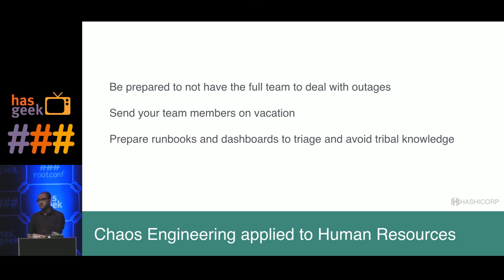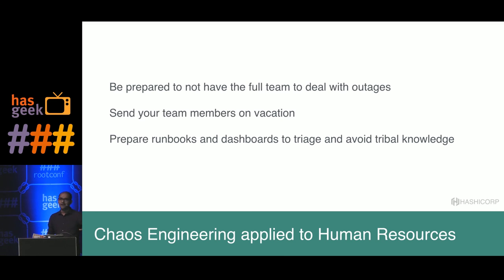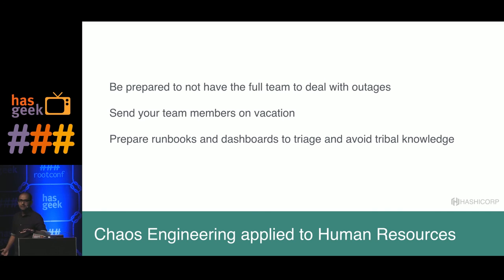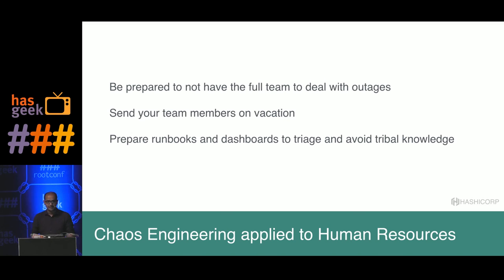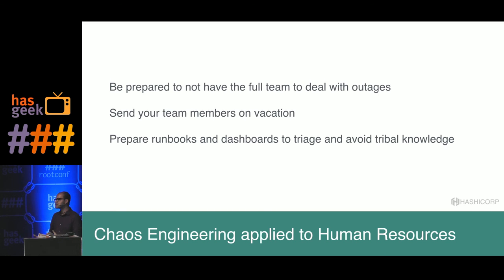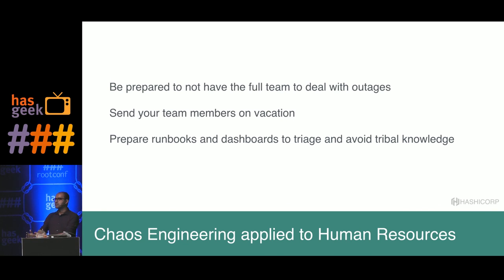Chaos engineering should also be applied to human resources. If a colleague is not around, it should not mean the team can't handle a production failure. We used to say 'let's play Chaos Monkey on people' — ask someone to go on vacation and see how the team does. It has some cultural implications, but it ensures everyone knows how to run maintenance on nodes and services, and prepares run books and dashboards. All the knowledge people have should be in run books and not in gray cells — tribal knowledge is dangerous.